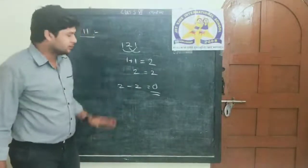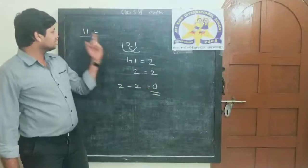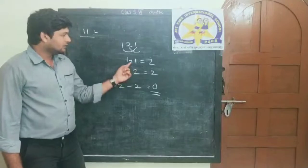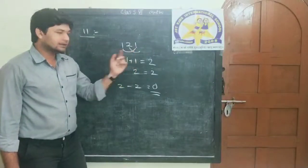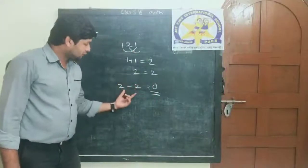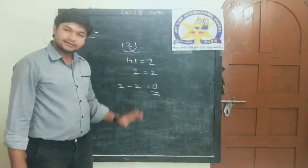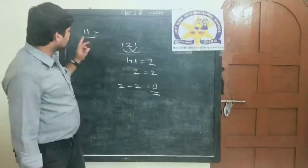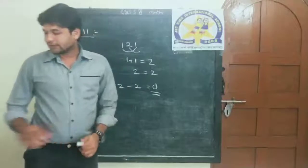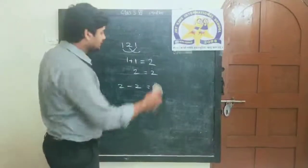Zero is divisible by 11, and 0 is divisible by any number. So if the difference of the sum of the alternate digits of the given number is divisible by 11, then the whole number will also be divisible by 11. Take a screenshot if you want to — the next example will make this clearer.